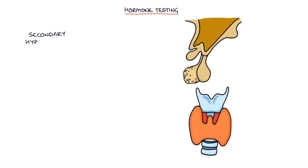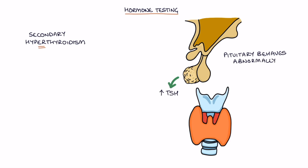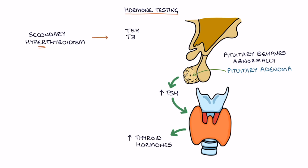Secondary hyperthyroidism is where the pituitary gland behaves abnormally and produces excessive TSH, usually from a pituitary adenoma. The excessive TSH stimulates the thyroid gland to produce excessive thyroid hormones. TSH, T3 and T4 will all be raised.